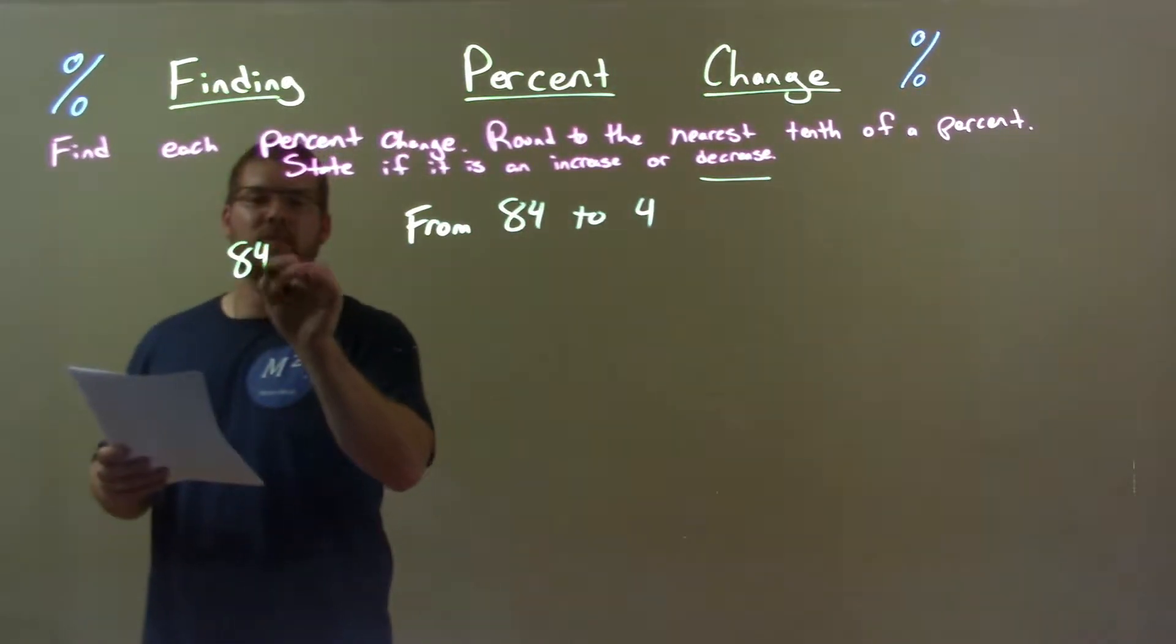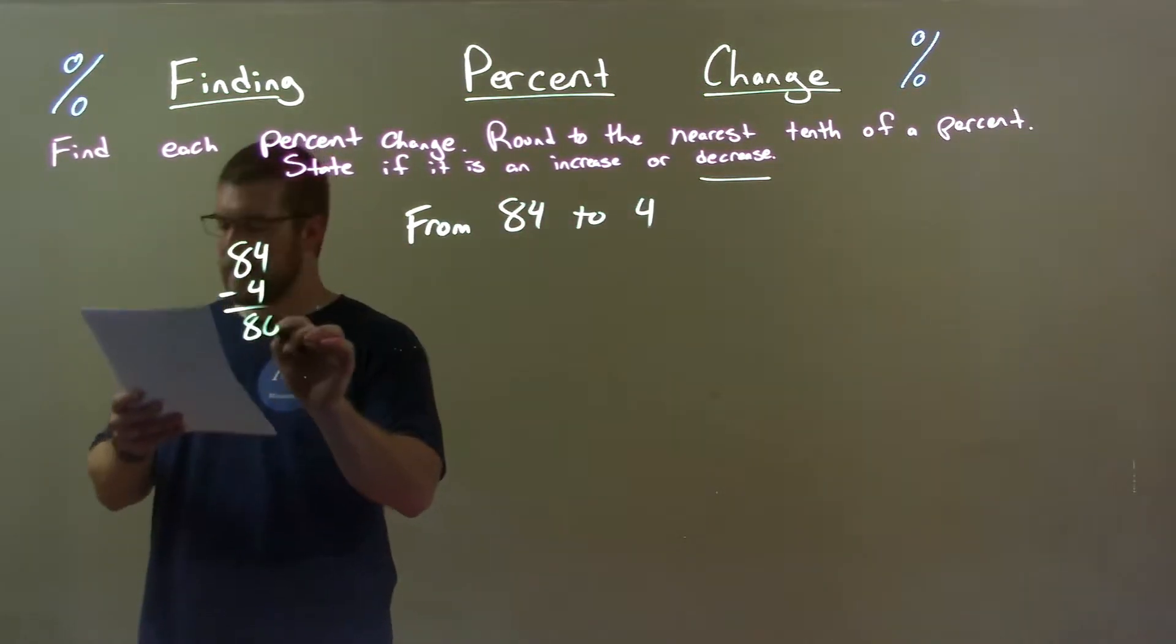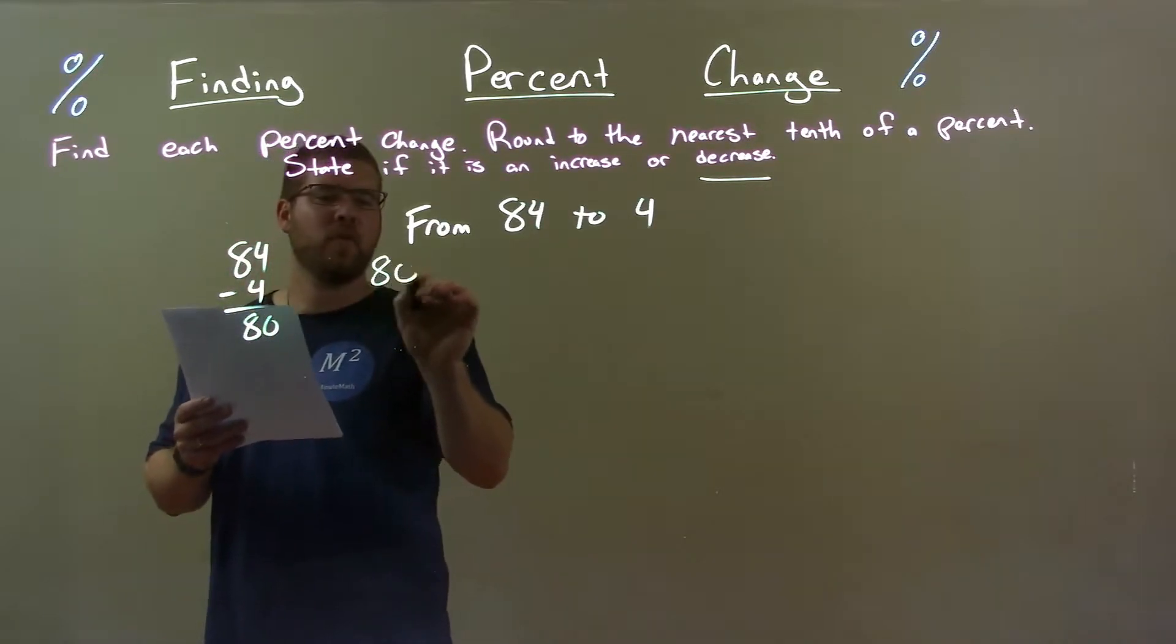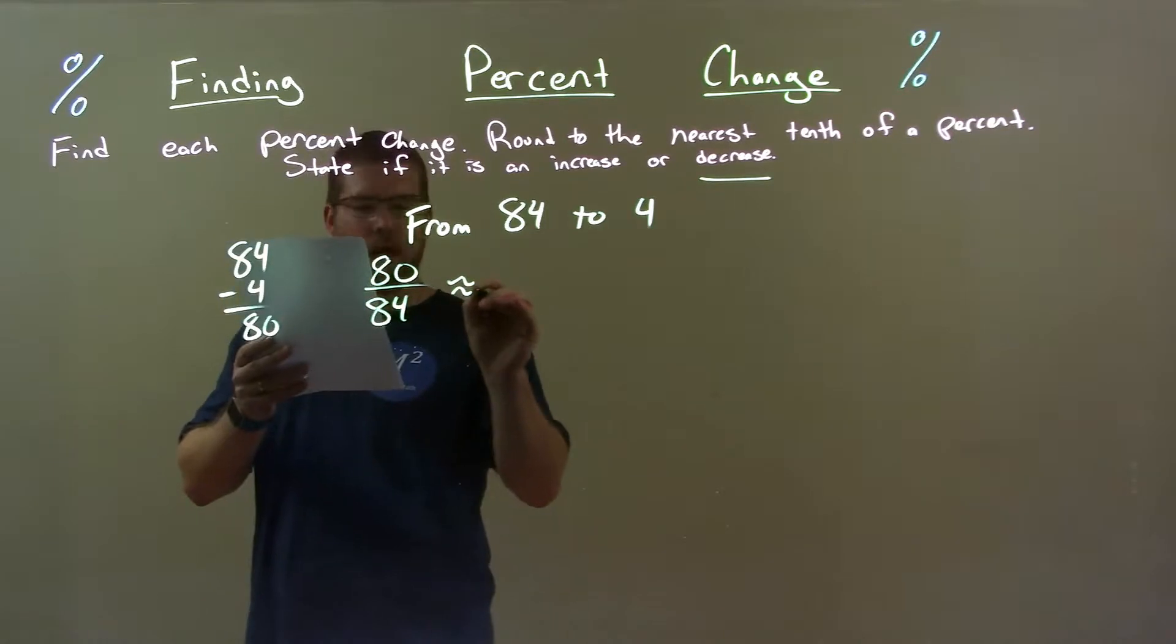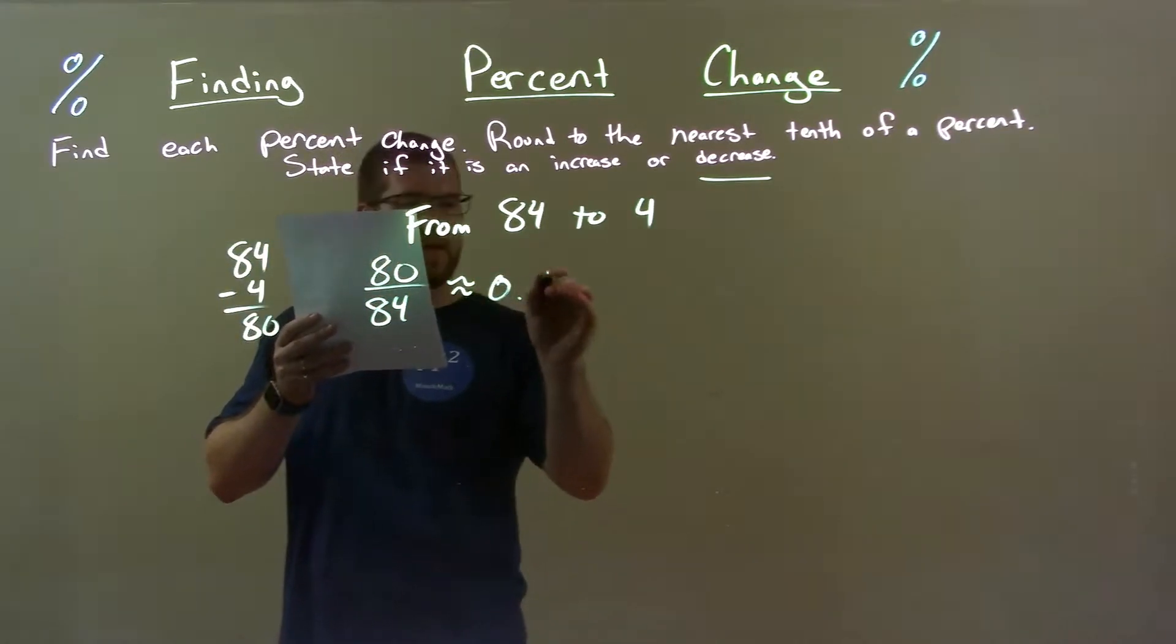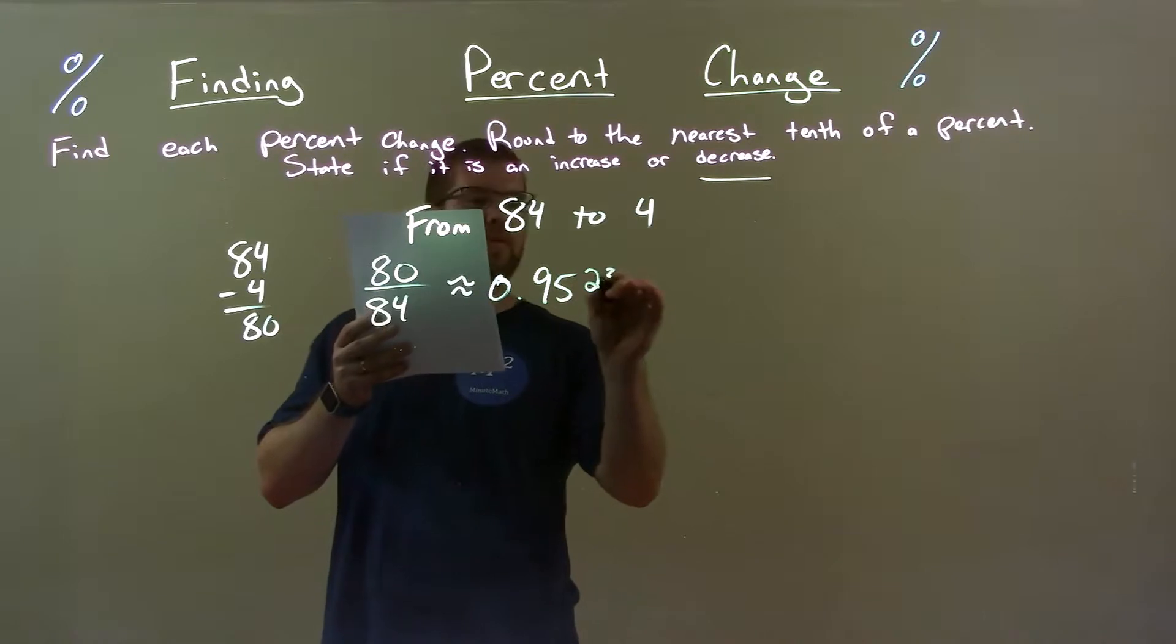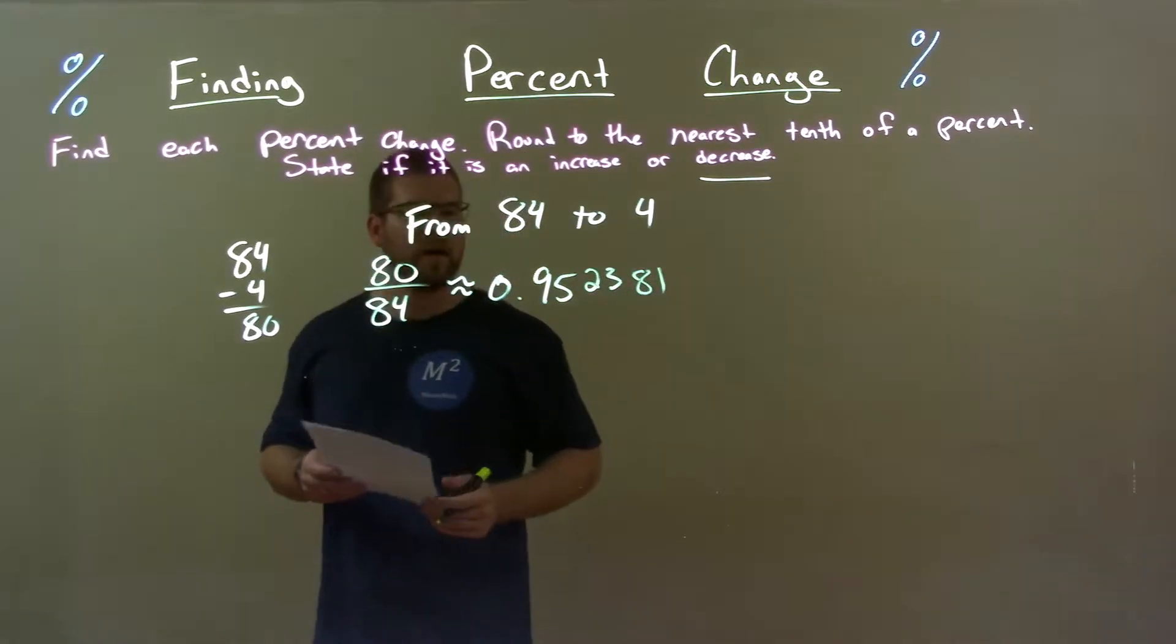Difference between the two, 84 minus 4 is just 80. Take that 80, divide it by the first number, 84, and that comes out to be approximately 0.952381.